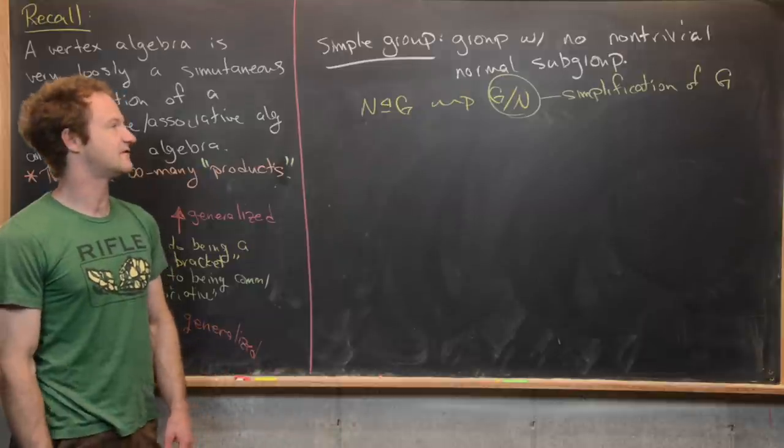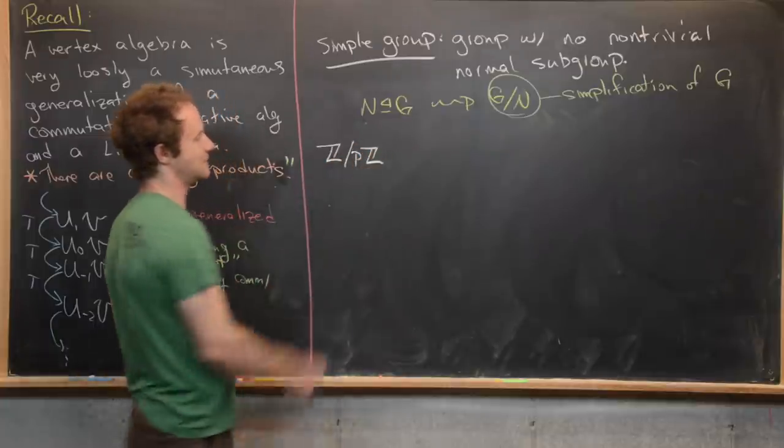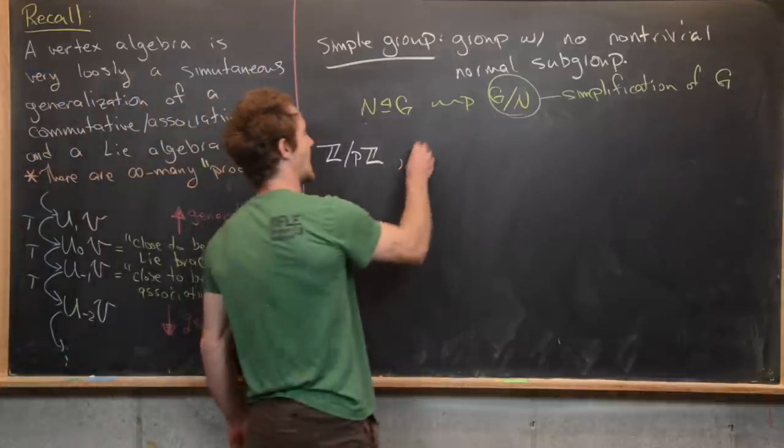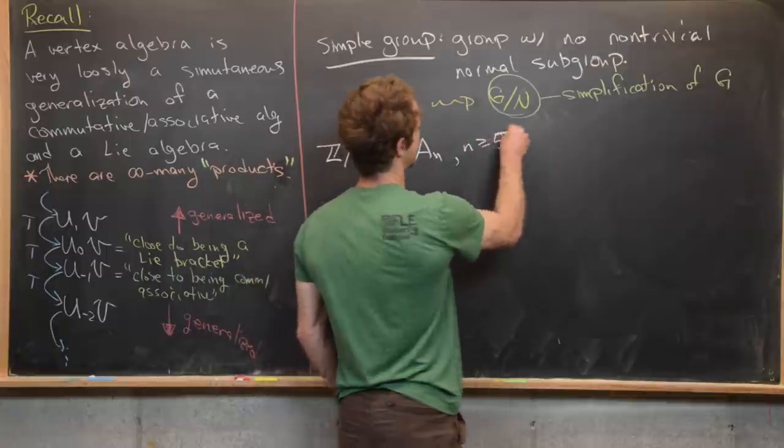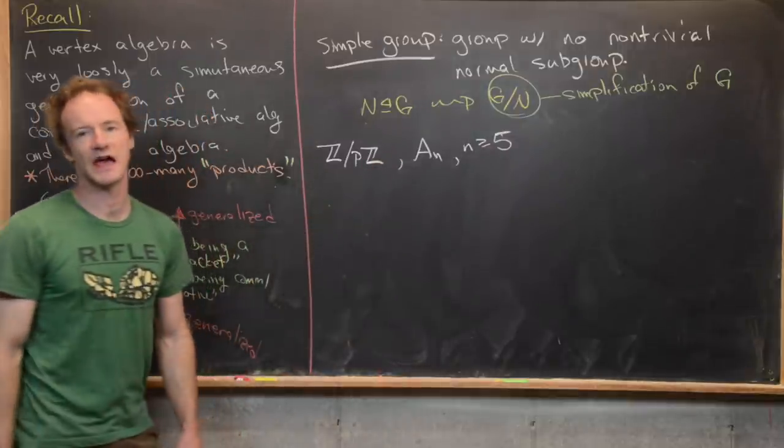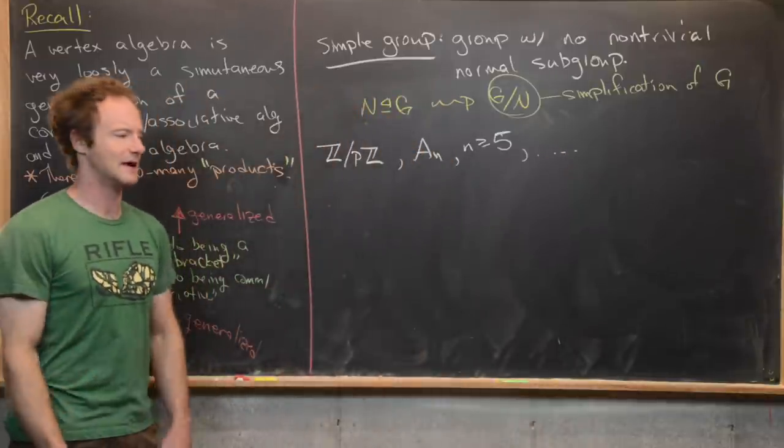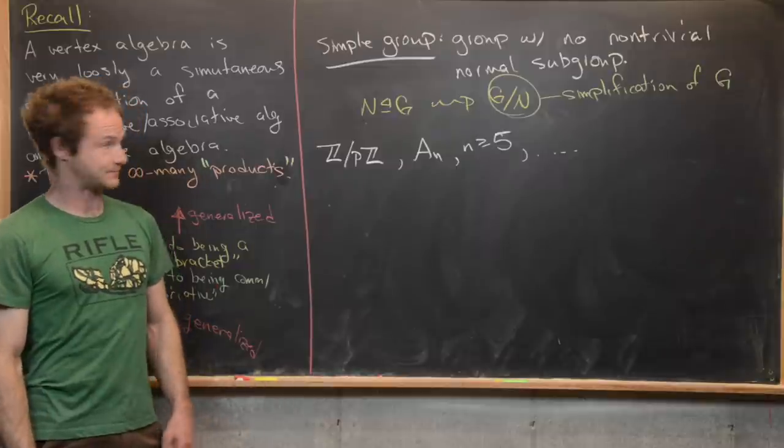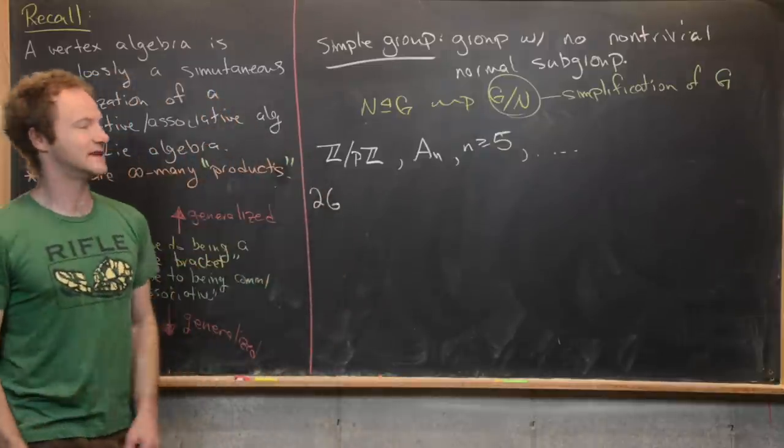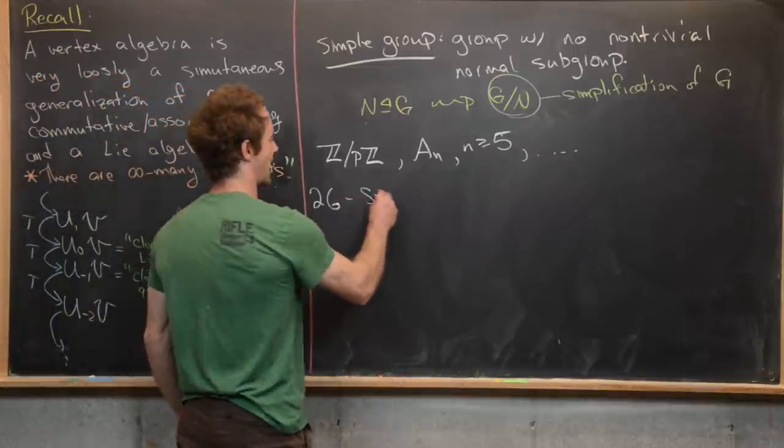So there are some standard infinite families of these simple groups, like Z mod p Z, where p is a prime. So that guy doesn't have any subgroups at all, let alone normal subgroups. And then Aₙ the alternating group where n is bigger than or equal to five. So that's a standard result from like an abstract algebra one class, you prove the simplicity of Aₙ. And there are more that are of Lie type, so they can be represented by matrices with entries from finite fields. So there are 26 more that do not lie in this list of families of simple groups, and those are called the sporadic simple groups.